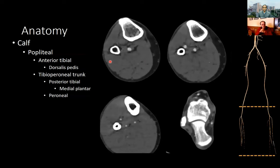In the calf, the popliteal artery extends from above the knee to below the knee. The typical branching pattern is that the anterior tibial artery comes off, leaving a tibial peroneal trunk, which then bifurcates into the posterior tibial and peroneal arteries. At the foot, the two branches we typically expect to see are the dorsalis pedis — the continuation of the anterior tibial artery — and the medial plantar artery, the continuation of the posterior tibial artery. The lateral plantar artery is somewhat variable in visibility depending on exam quality.